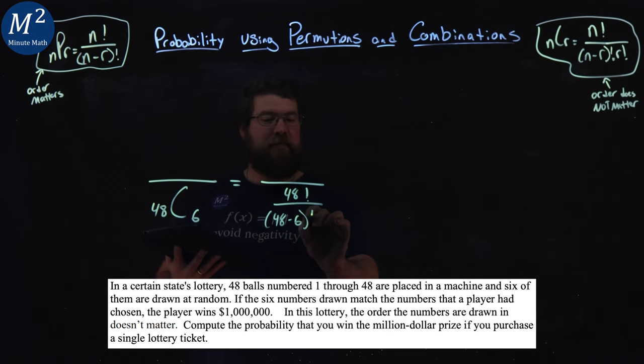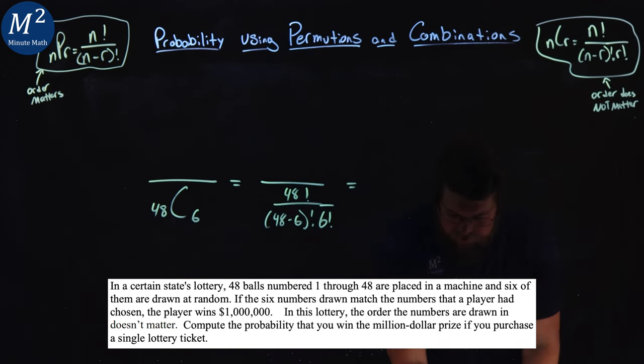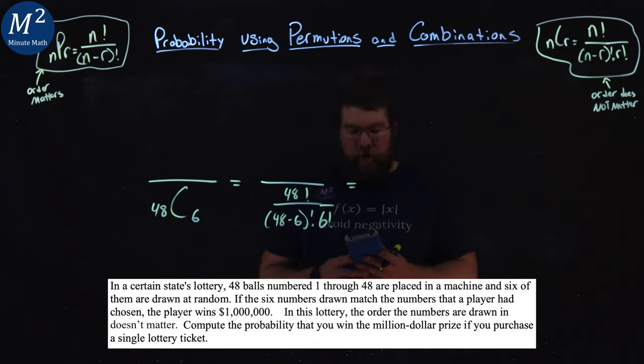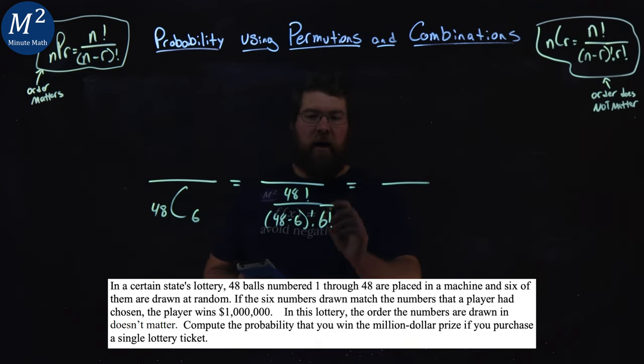And then we have a six factorial at the end for the bottom, for the total. And we can use our calculator to do this. We can also use the NCR function in our calculator if you have that, it's up to you. But we can also multiply some of this stuff out.